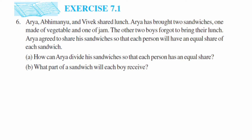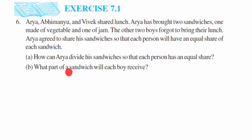The question is: Arya, Abhimanyu and Vivek shared lunch. Arya has brought two sandwiches — one made of vegetables and one of jam. The other two boys forgot to bring their lunch. Arya agreed to share his sandwiches so that each person will have an equal share of each sandwich. They are asking two questions: first, how can Arya divide his sandwiches so that each person has an equal share? Second, what part of the sandwich will each boy receive?